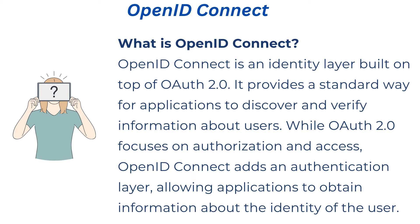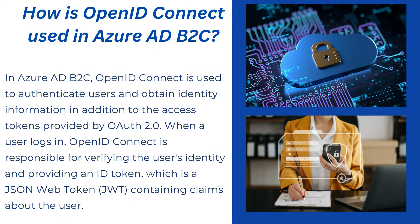In Azure AD B2C, OpenID Connect is used to authenticate users and obtain identity information in addition to the access token provided by OAuth 2.0. When you use the login flow, OpenID Connect is responsible for verifying the user's identity and providing an ID token — a JSON Web Token (JWT) — which contains claims about the user. So this ID token is the one which will have claims about the users.